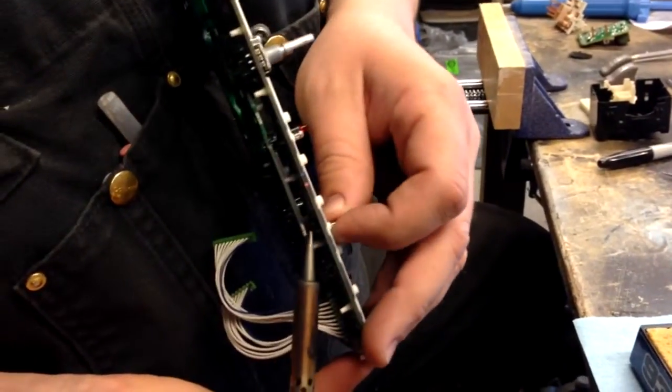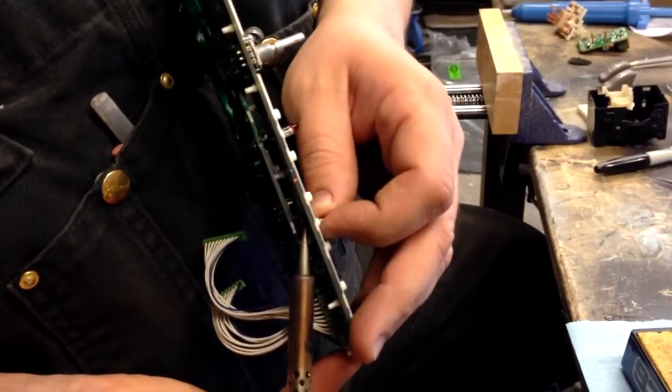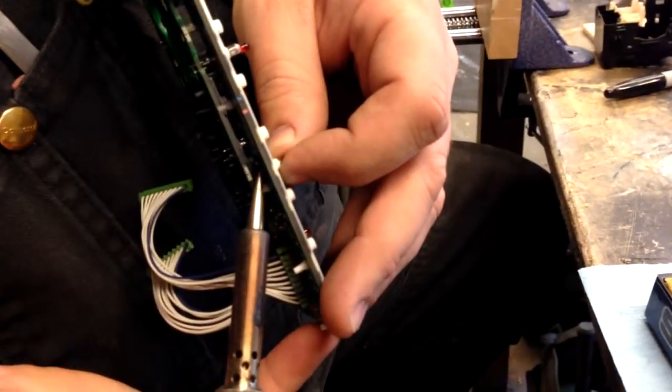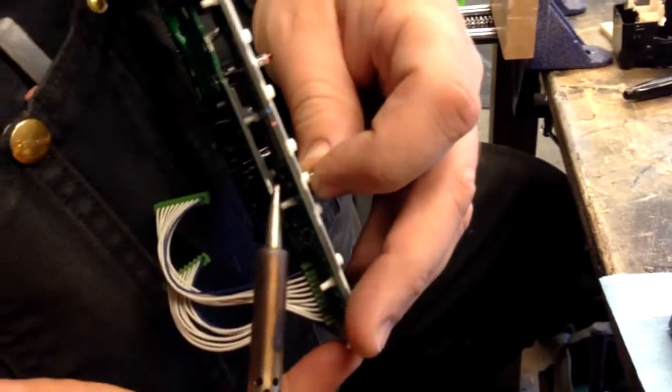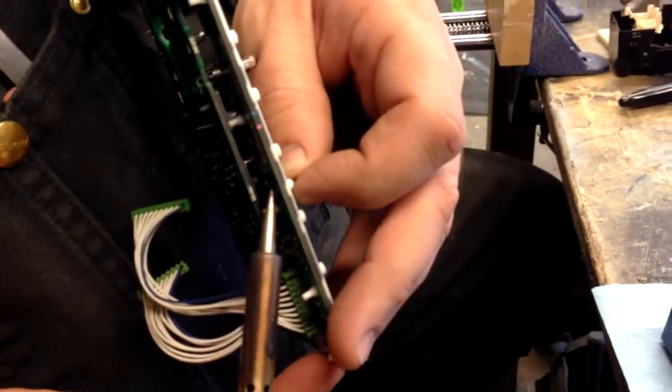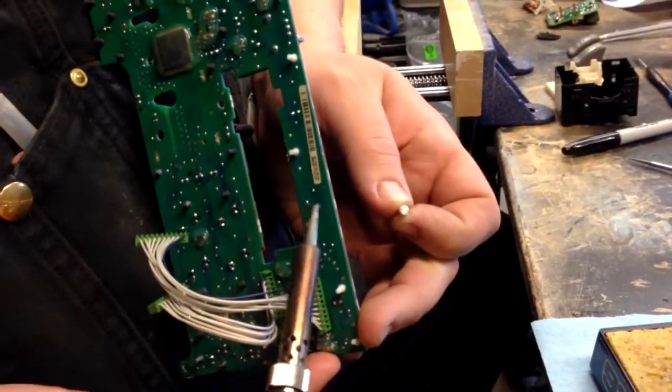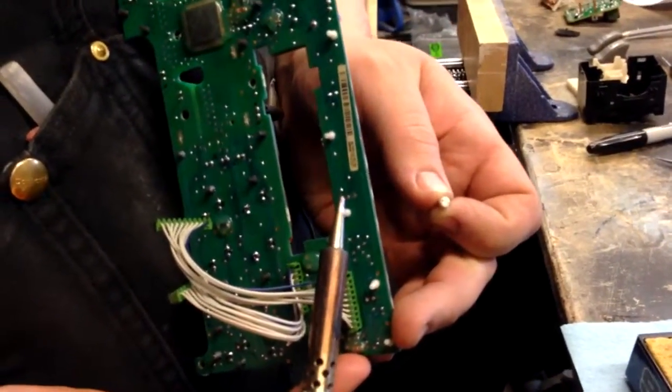So I'm going to heat this one up again on this side here, and you can see the bulb move a little bit. And go back to the other side and heat it up, and you can see the bulb move. Come back to the first one, go back to the second one, and just like that, it's out. And we haven't even destroyed the traces or made a big mess.